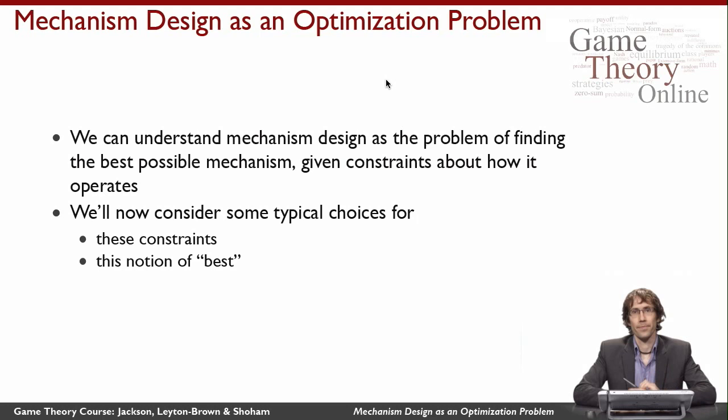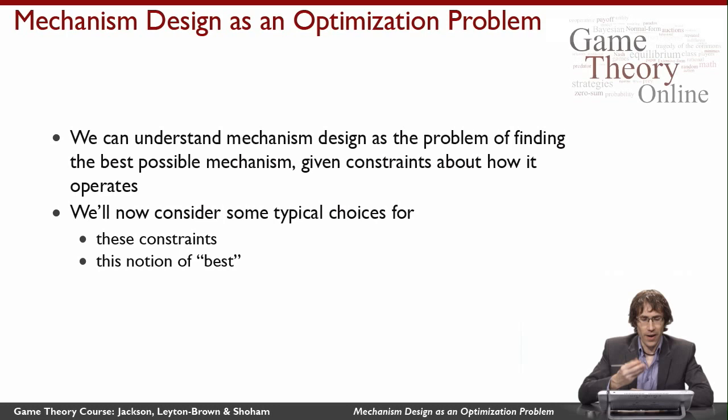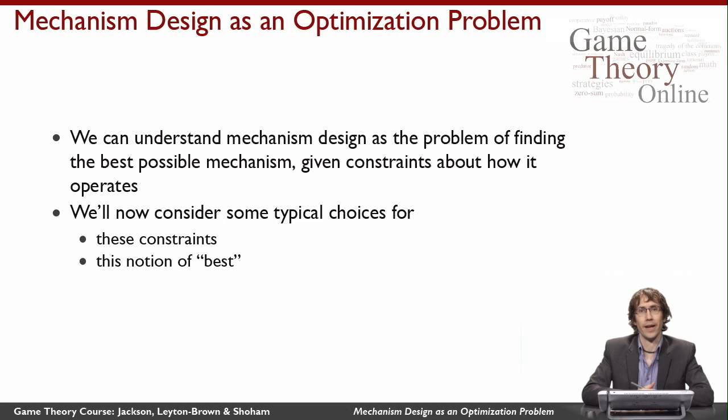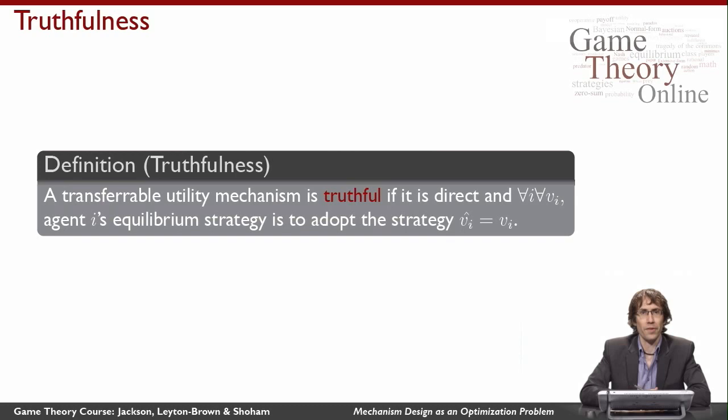This video is about how to see mechanism design as an optimization problem. We can understand the task of doing mechanism design as an optimization that asks us to find the best mechanism according to some definition of best, given various constraints about how the mechanism has to behave and what kinds of things it's allowed to do. I'll cover common constraints we impose and different notions of best that we optimize under these constraints.